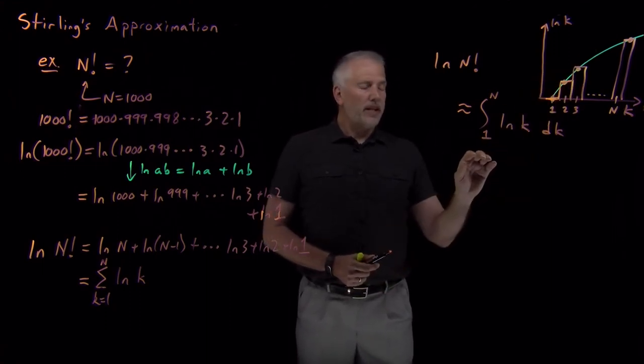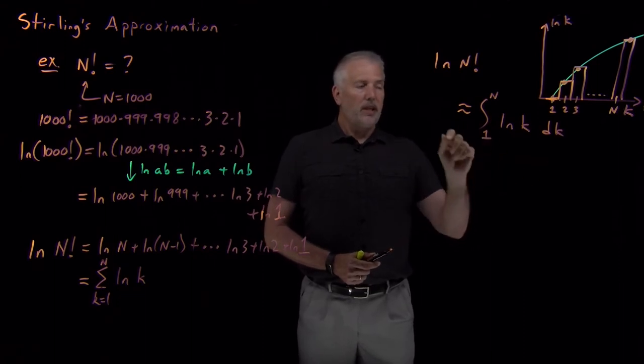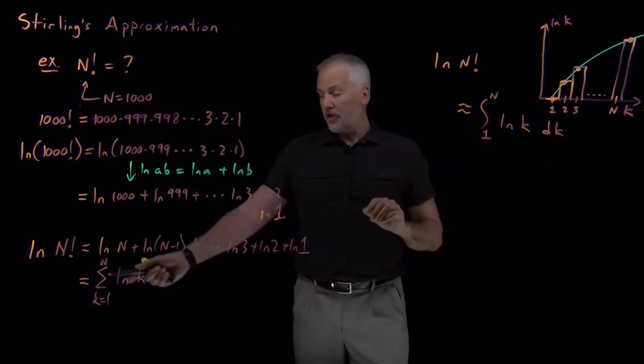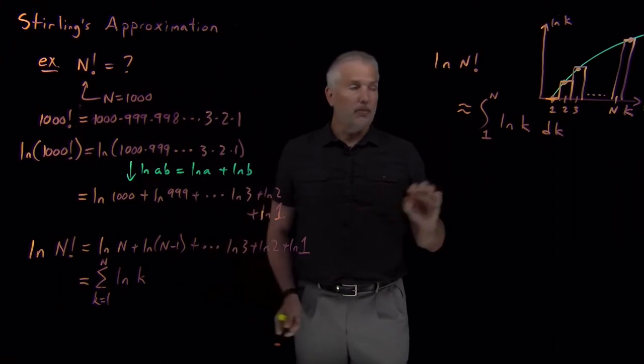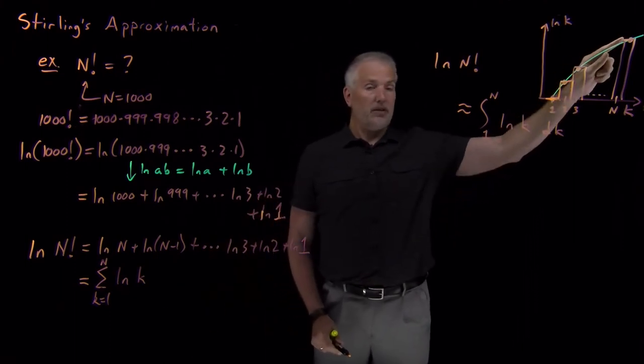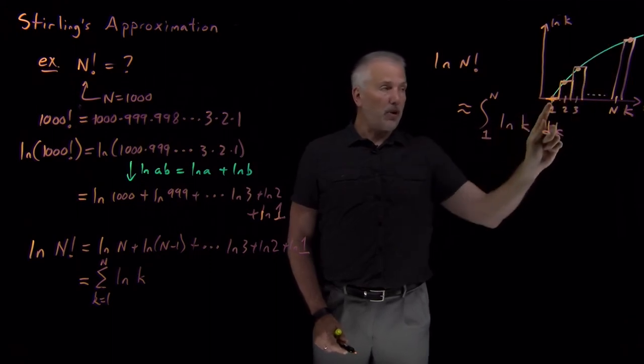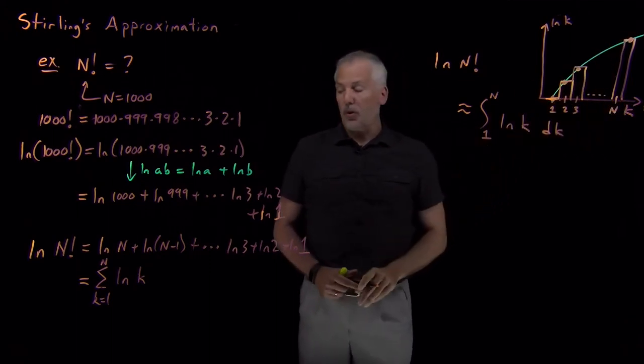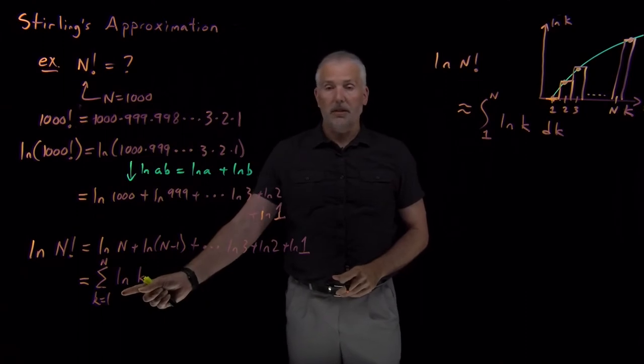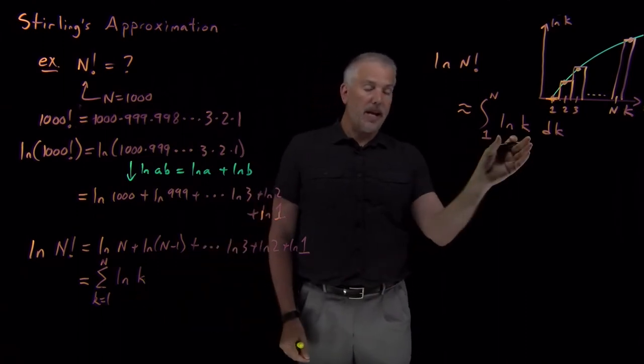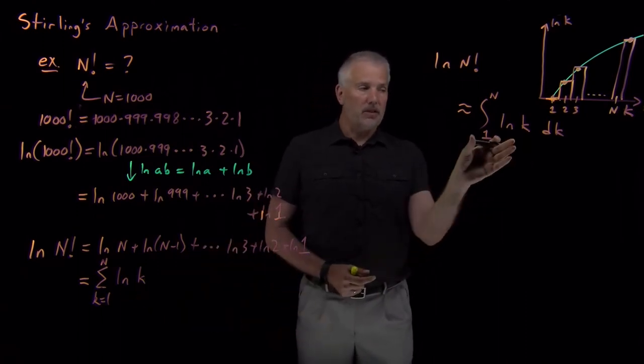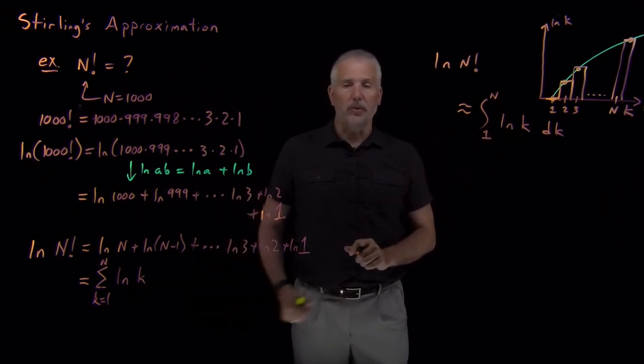It's worth pointing out that in calculus class, the way we initially calculated integrals is using a sum to approximate the true area. Often in calculus, you want to find the area under the green curve and you approximate it with a bunch of skinny rectangles. In this case, what we actually want is the sum of the rectangles, and we're approximating that with the value of the integral.